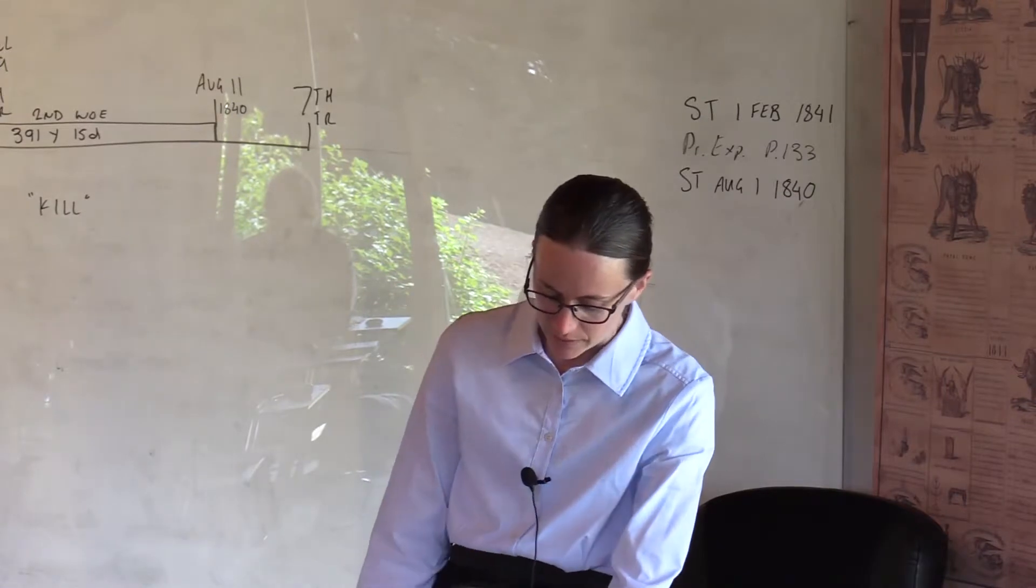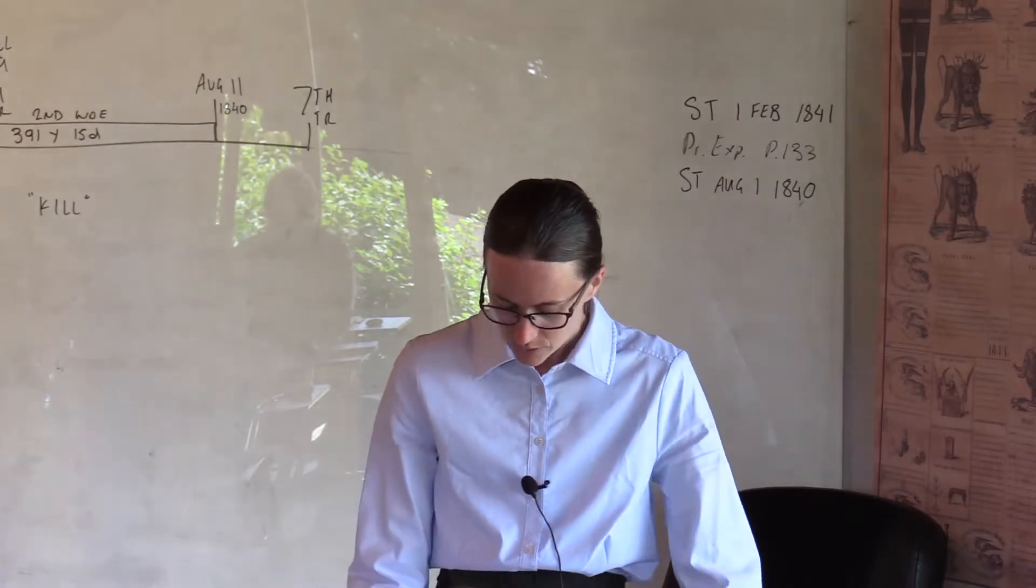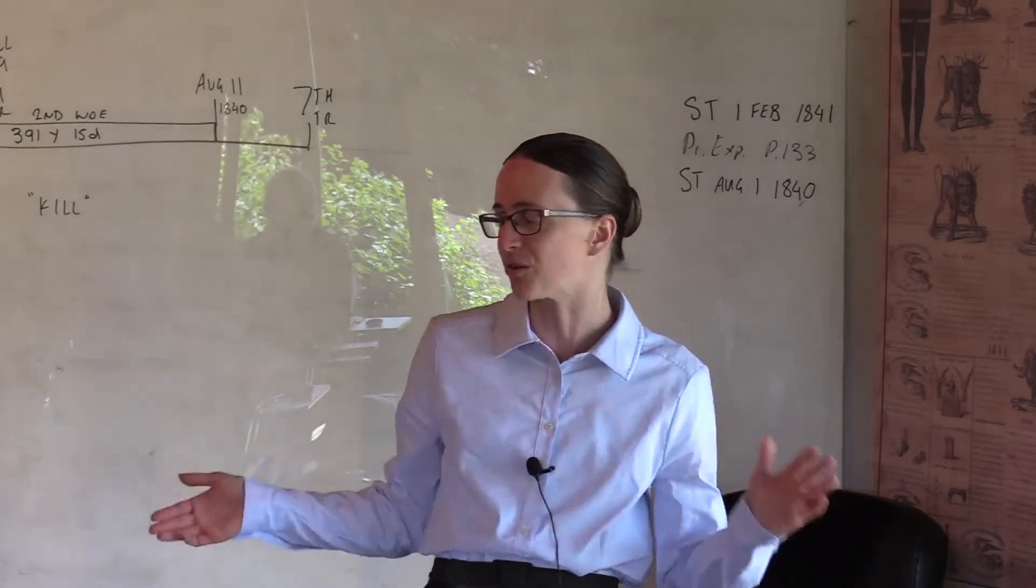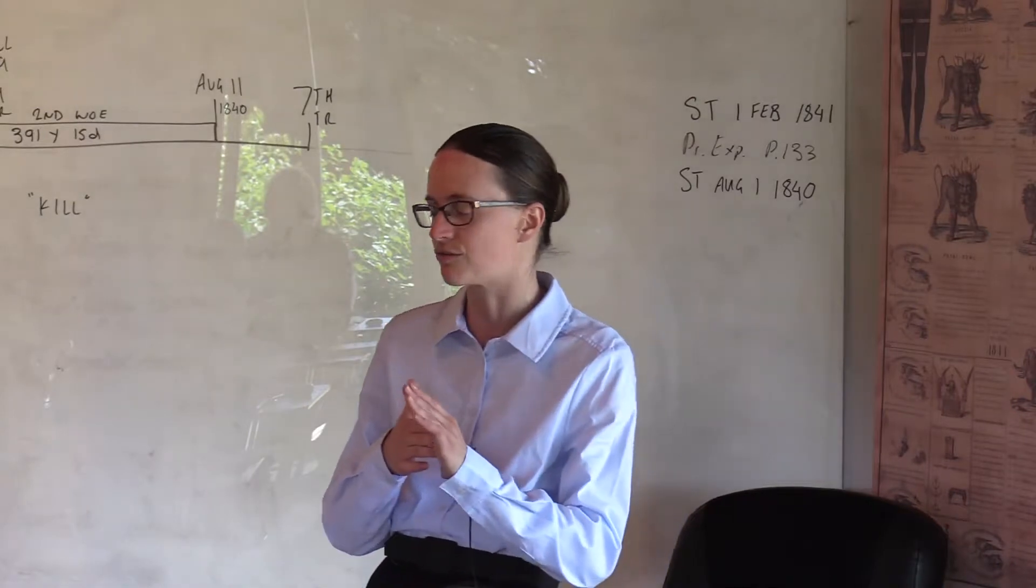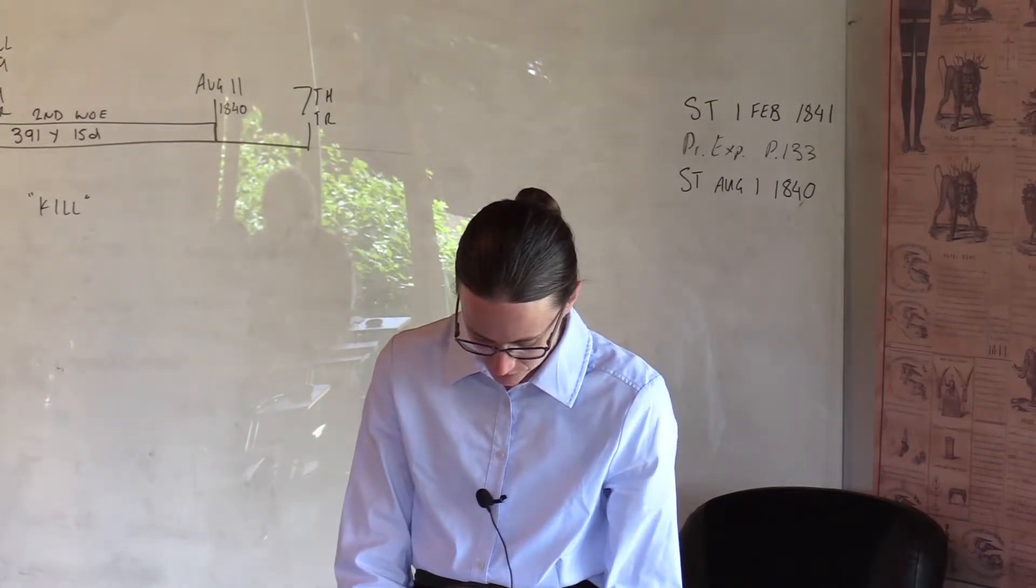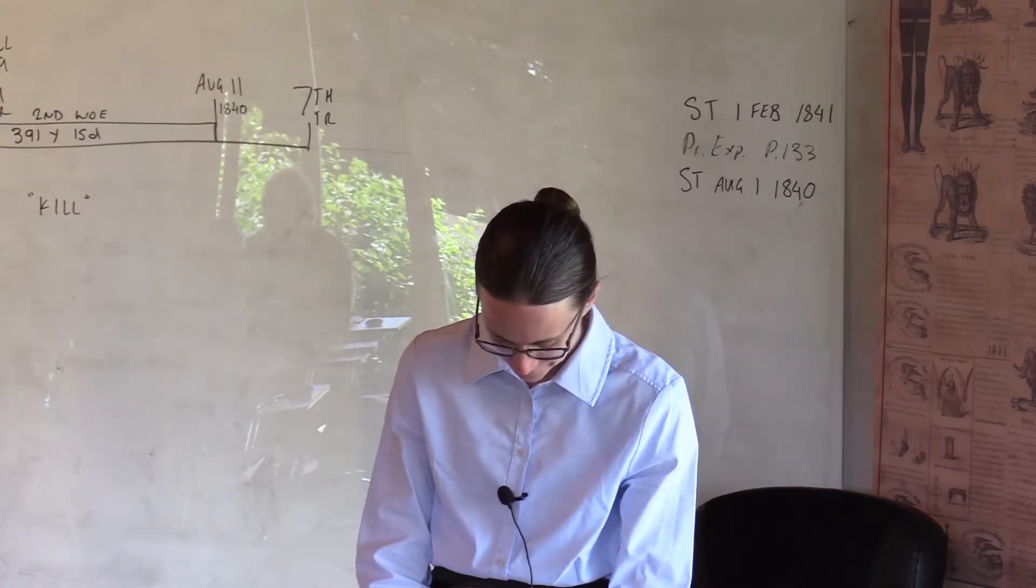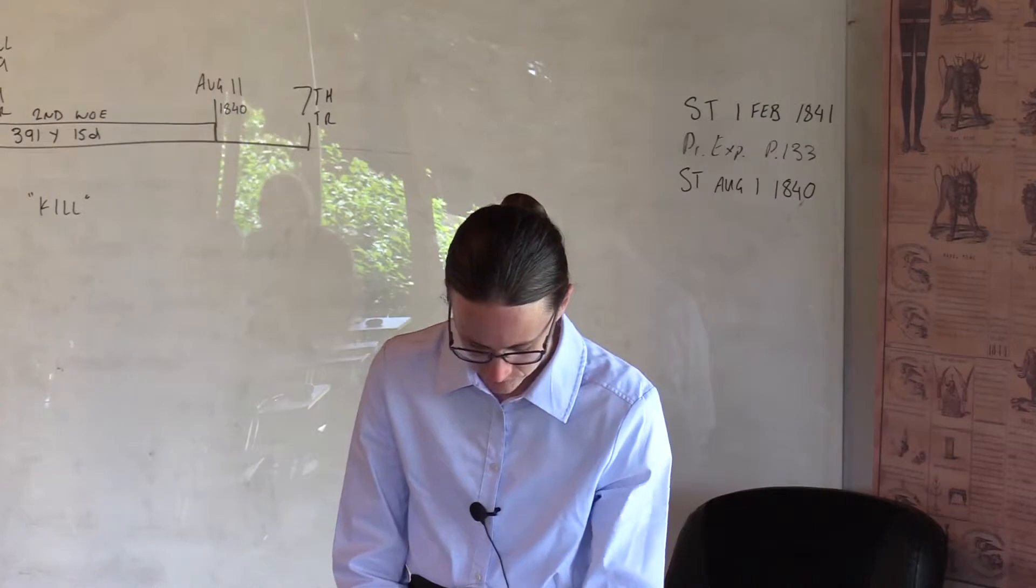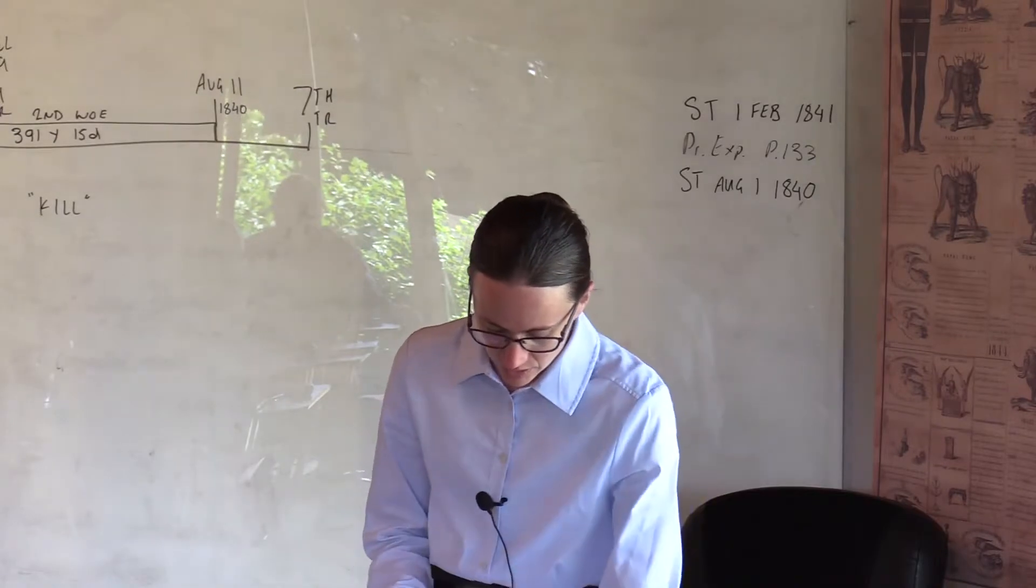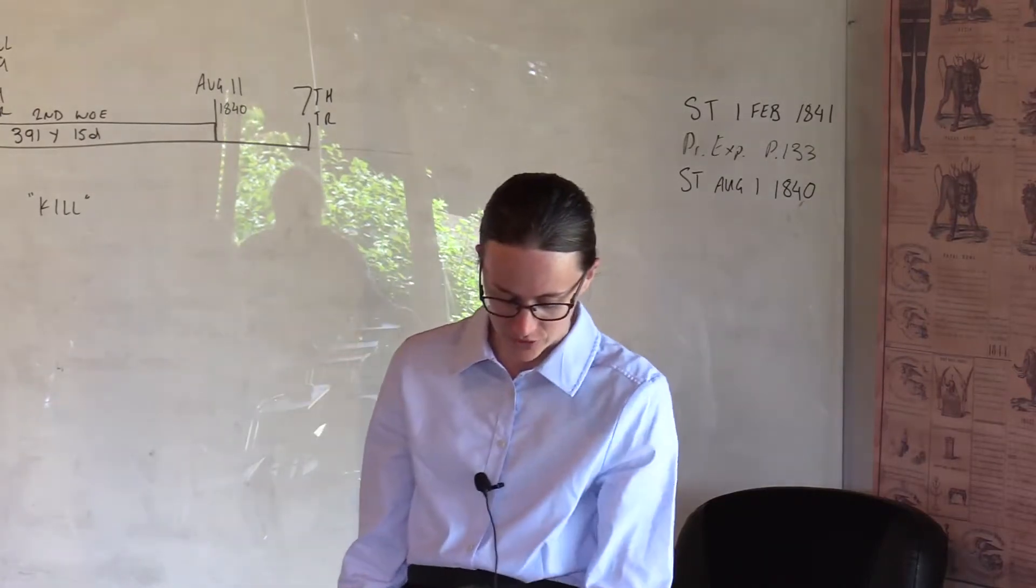So verse 16 of Revelation 9, and the number of the army of the horsemen were 200,000,000, and I heard the number of them. So Josiah Litch speculates that this enormous number is in reference to the entirety of all the warriors over the entirety of the woe, which would make sense because I think it's too large to be literal in that instance, which was when Constantinople was destroyed. So something interesting that the Ottomans had, and which is referred to in the chapter as well, is their new forms of warfare.